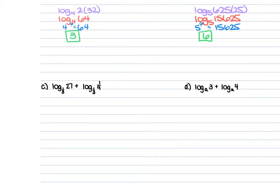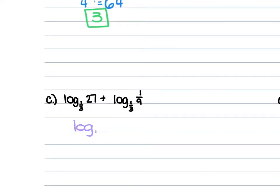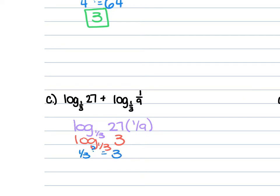For c, we have log_(1/3) of 27 plus log_(1/3) of 1/9. This gives us log_(1/3) of 27 times 1/9. 27 times 1/9 is 3, so this is log_(1/3) of 3. Now, 1/3 to what power is equal to 3? 1/3 to the negative 1st power is positive 3, so negative 1 is our answer.